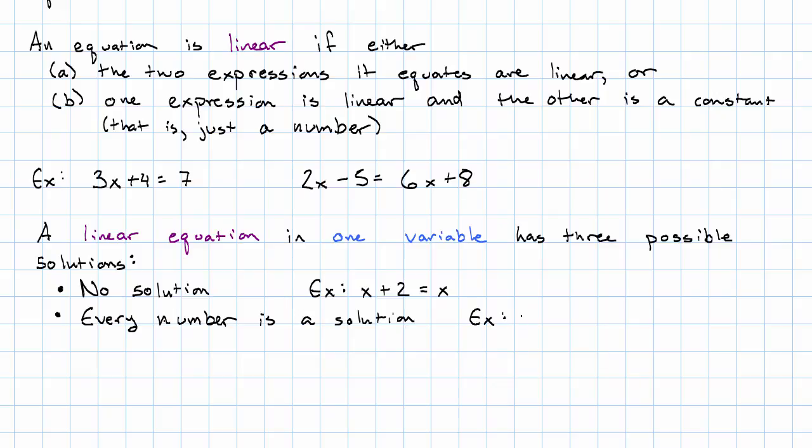For example, 2 times x plus 1 is 2x plus 2. Right, those expressions are actually equivalent, just use the distributive property. So that equation is true no matter what the number is. These are kind of the weird cases. These are not what we expect to see when we write down an equation. What we expect to see when we write down an equation is exactly one solution.